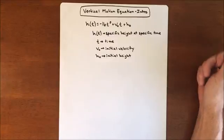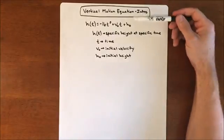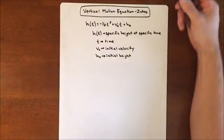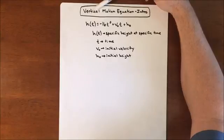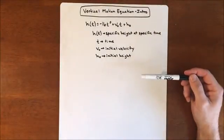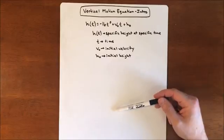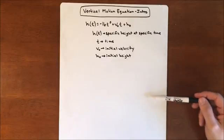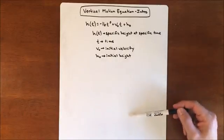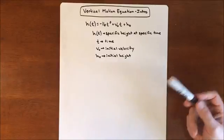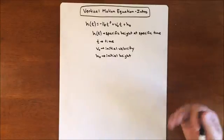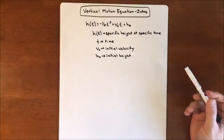Those are the types of things we can use this for. Please understand that it is a vertical motion equation — it's literally something going straight up and coming back straight down. It's not the path of a football being thrown. It's throwing an object straight up and down and seeing where it is after a specific amount of time, or how long it takes to hit the ground.